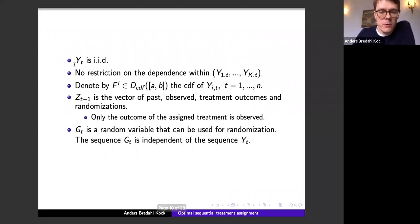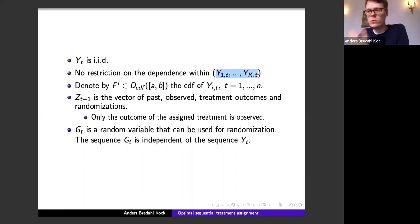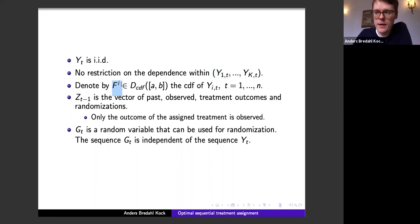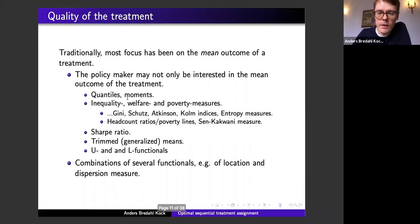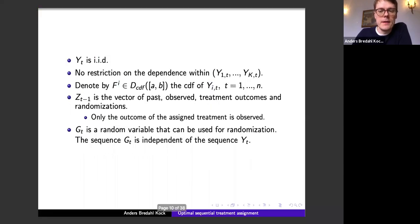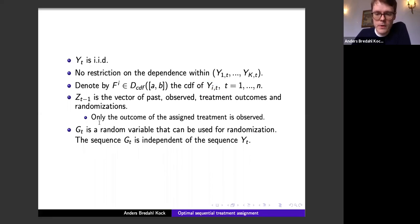We assume individuals who arrive are i.i.d., however we put no restrictions on the correlation between the K potential outcomes. Two treatments with similar ingredients — for instance drugs — could have highly correlated treatment outcomes. We denote by φ_i the distribution pertaining to the i-th treatment, and note it does not depend on t due to the i.i.d. assumption. We denote by Z_{t-1} the history of past observed treatment outcomes and randomizations.